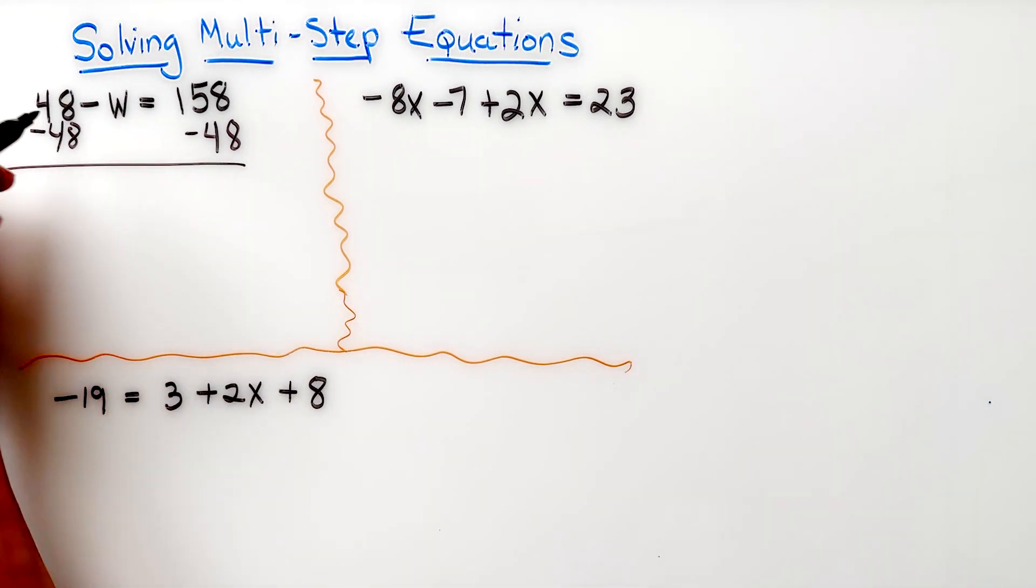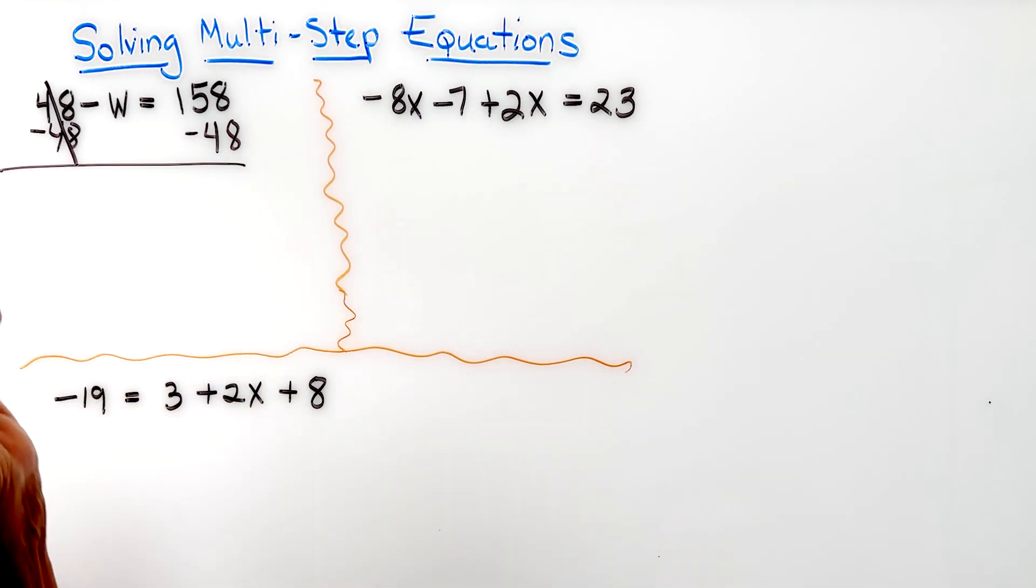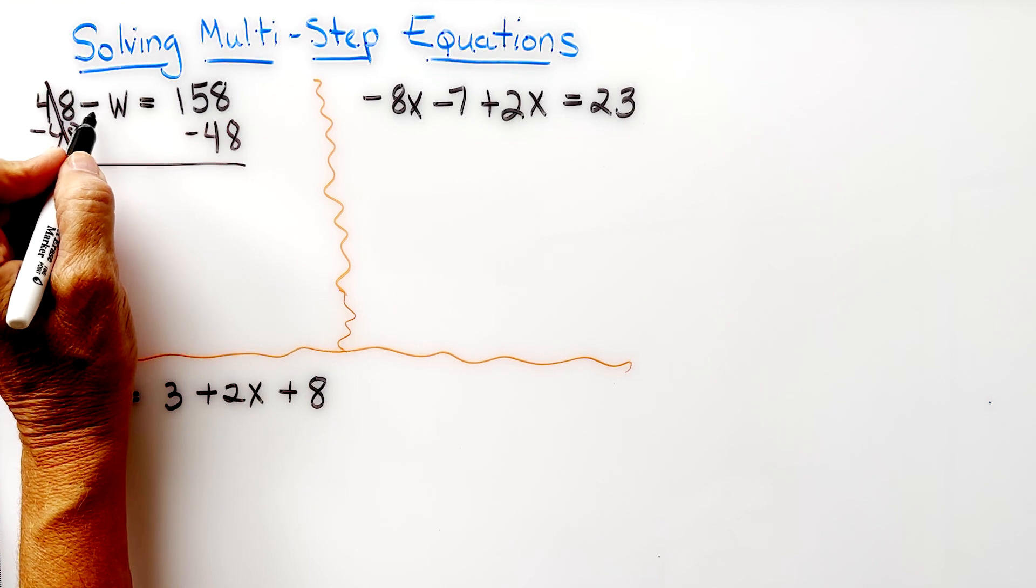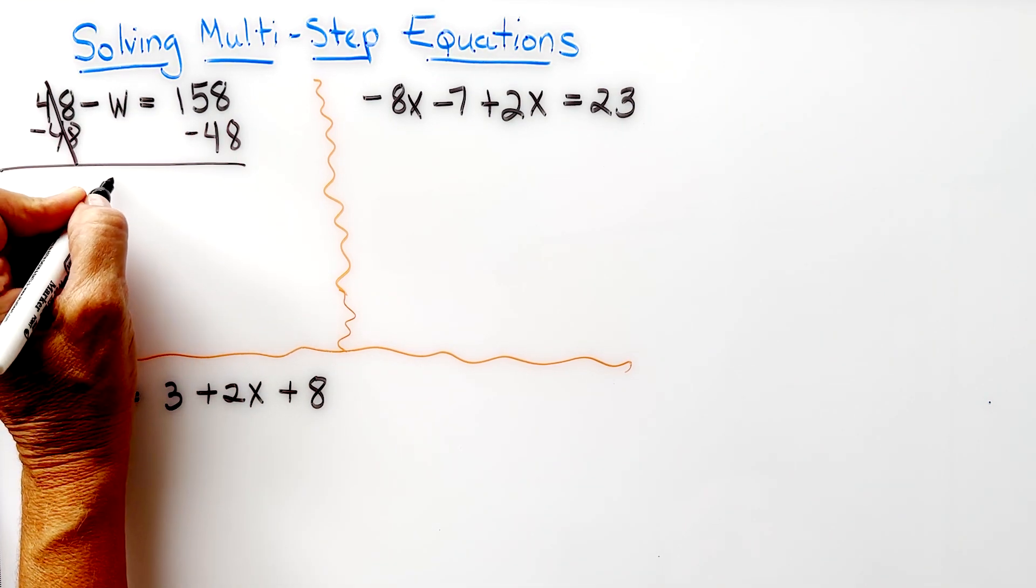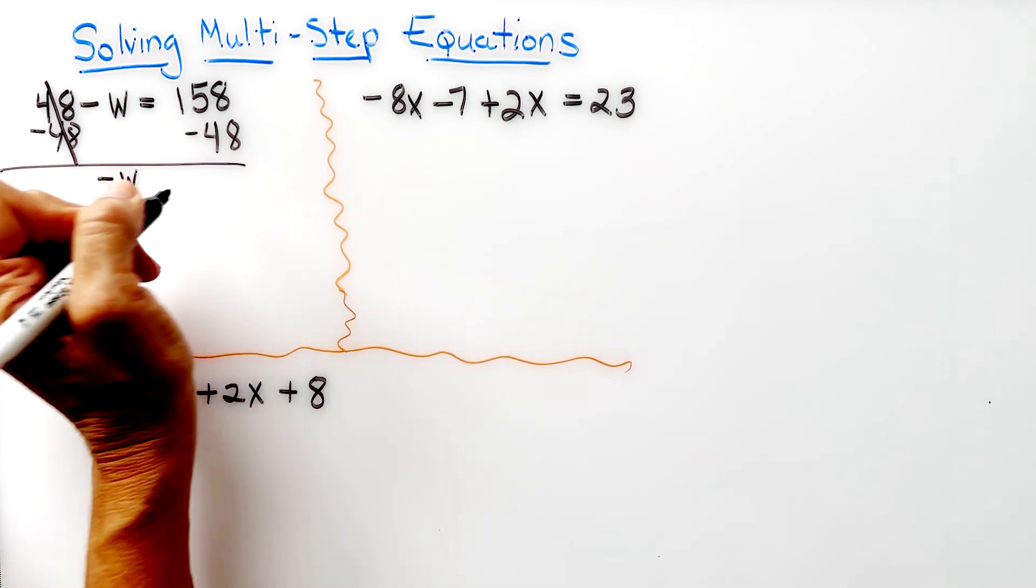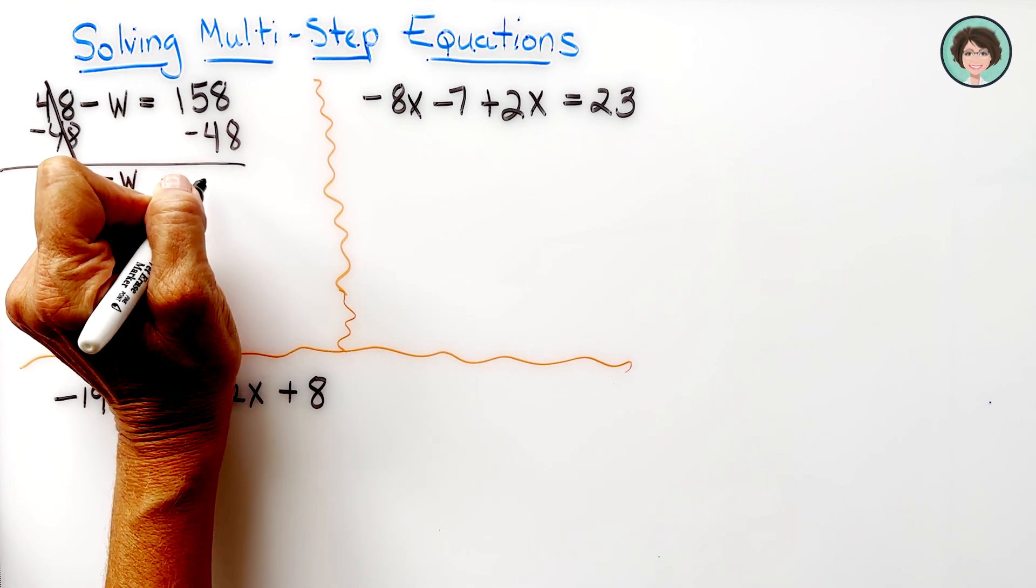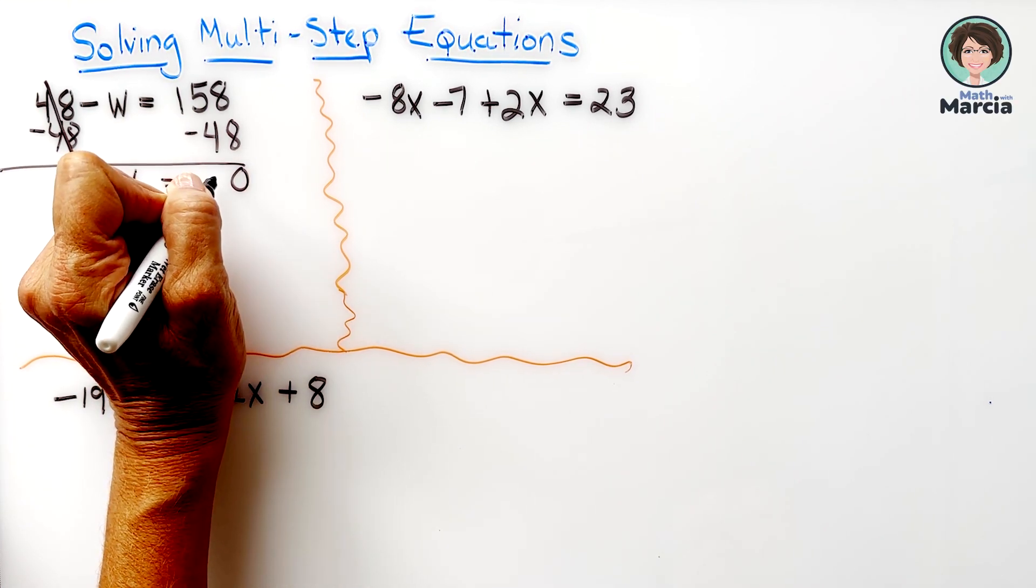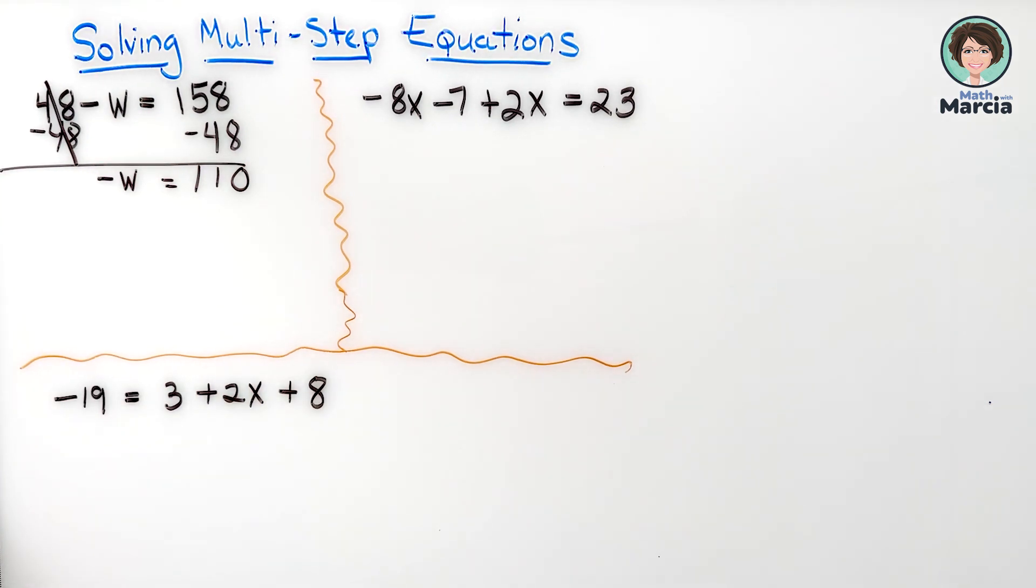Now the w is almost by itself, but that subtract w is a negative w, or the opposite of w, which equals 110.